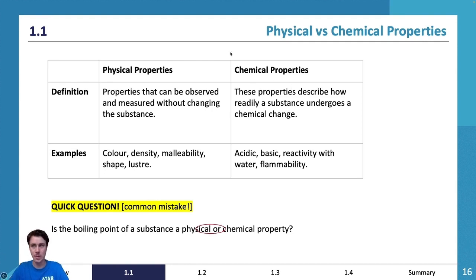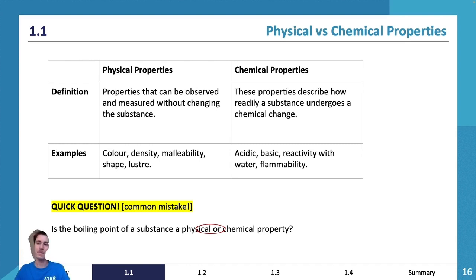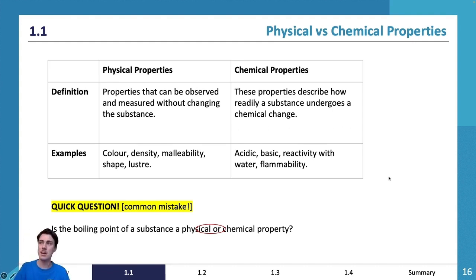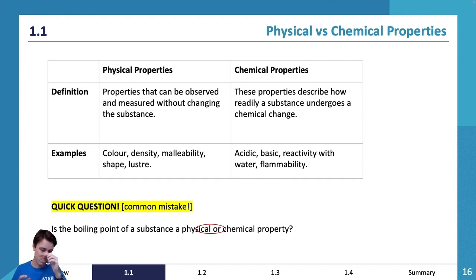Boiling point is actually a bit of both physical and chemical. It relates to chemical properties — specifically the bonds between molecules — but it's also something you can physically observe. Bonds determine boiling point, yet at the same time it physically changes what's going on and can be observed. It's a slightly obscure example, so don't worry too much if that's not fully clear yet.